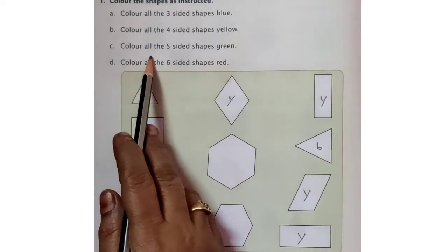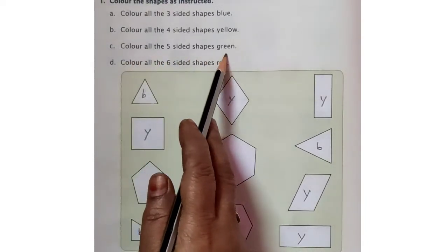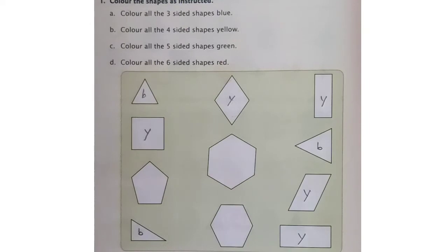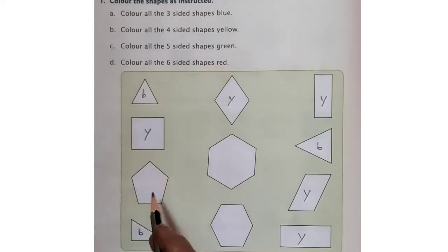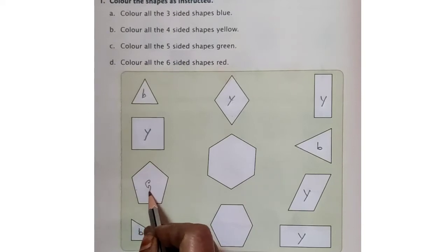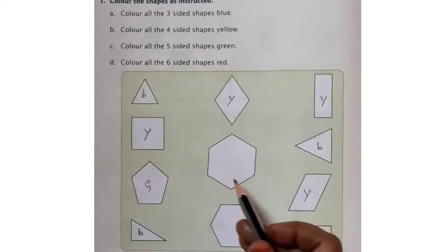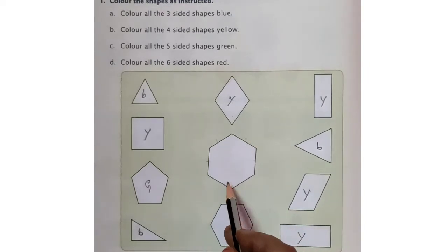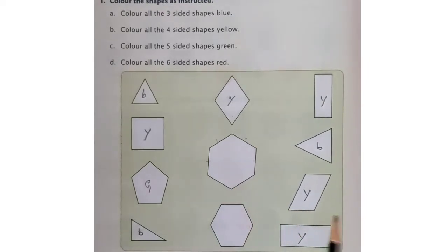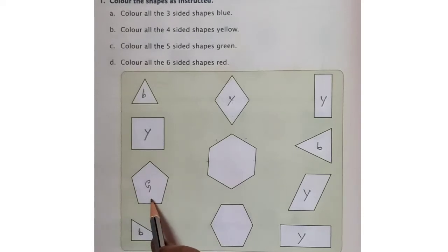Now, colour all the five-sided shapes green. The shape which has five sides, you have to colour green. Count: 1, 2, 3, 4, 5. So, this is green colour. And here count 1, 2, 3, 4, 5, 6 — no. Here also 1, 2, 3, 4, 5, 6. So, two shapes we have to colour green.